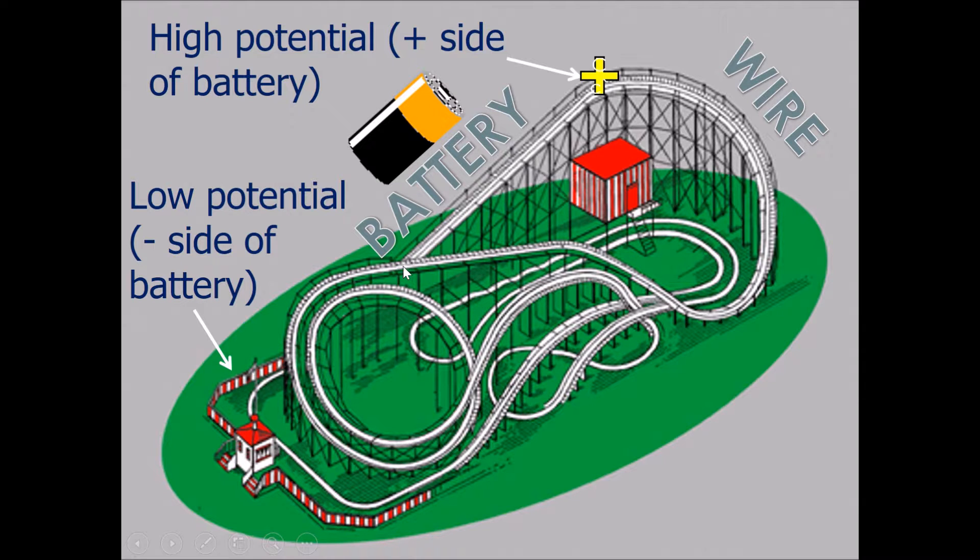So this is quite a good comparison to a battery and a circuit. Imagine the machine that pulls the cart up the initial slope is the battery. The battery has a plus side and a minus side. This represents high potential and low potential. So right now, if it's a battery on its own and there is no pathway connecting high potential to low potential, current cannot flow from the positive to negative.